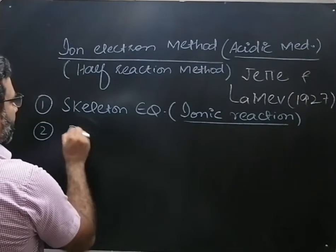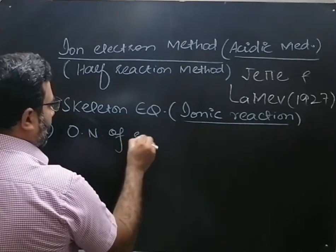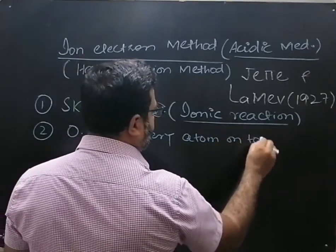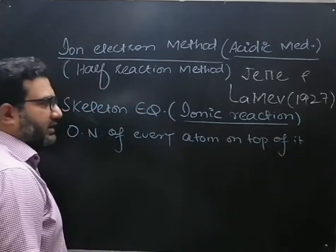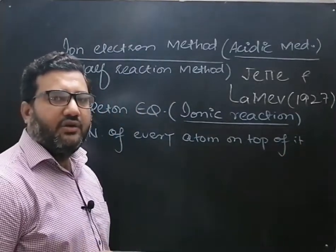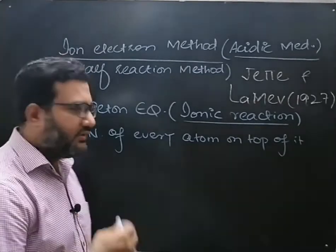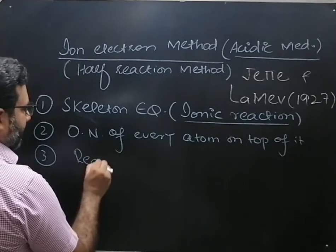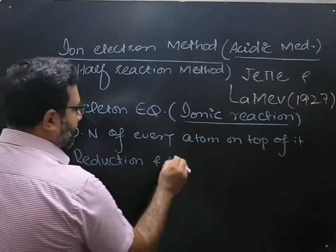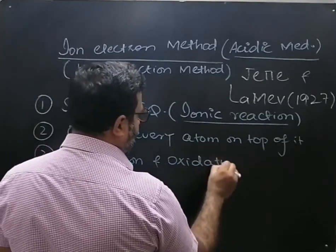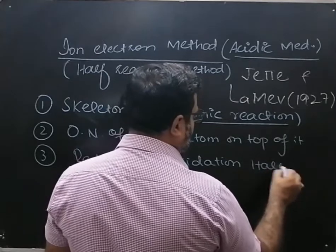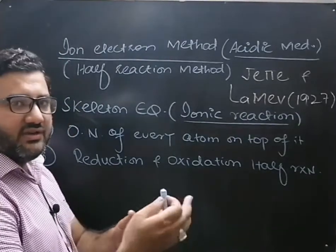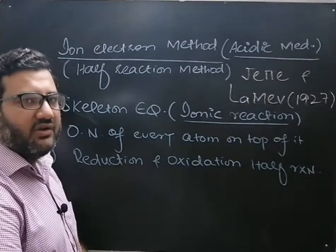Second, you will write down the oxidation number of every atom on top of it. So after writing the skeleton equation, you will mention the oxidation state of every atom above it. Third, you will show which one is the reduction half reaction and which one is the oxidation half reaction.